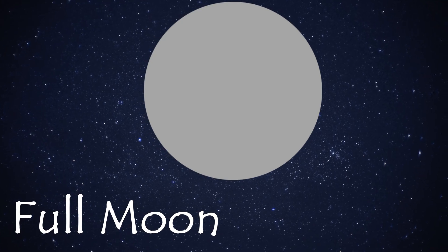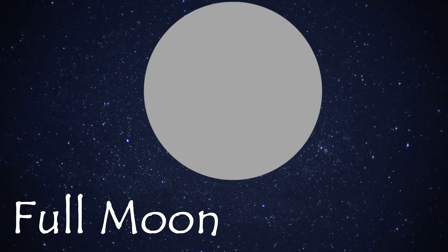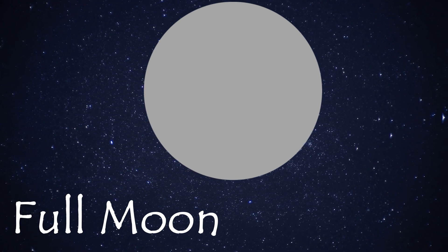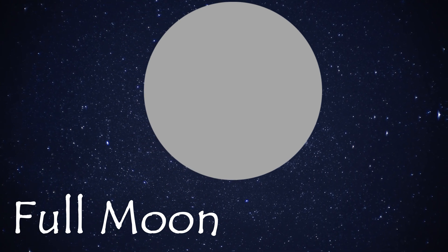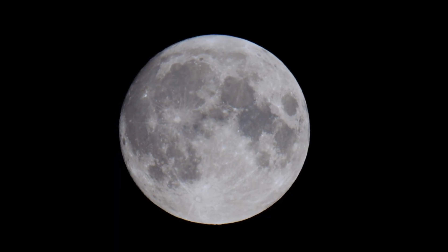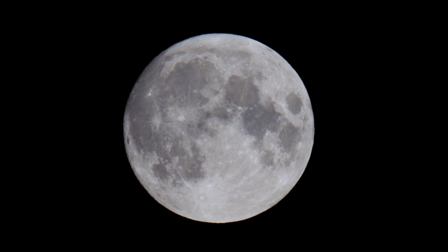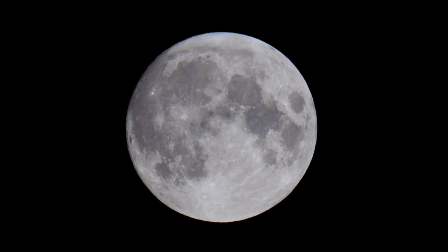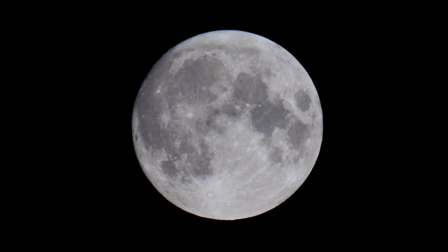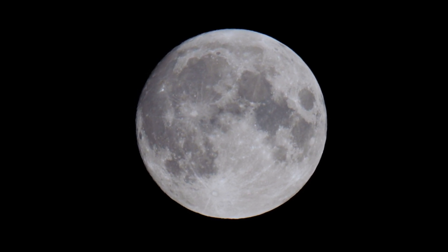The fifth phase of the lunar cycle is called the full moon. In this phase, the moon is the biggest, the brightest, and the most noticeable. At this point during the lunar cycle, the moon is halfway through its orbit around the Earth. This is the only time that there can be a lunar eclipse, because it is the only time the Earth's shadow would fall on the moon.